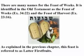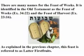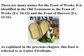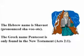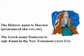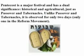There are many names for the Feast of Weeks. It is identified in the Old Testament as the Feast of Weeks, Exodus 34:22, and the Feast of Harvest, Exodus 23:16. As explained in the previous chapter, this feast is referred to as the latter first fruits. The Hebrew name is Shavuot, pronounced sha-voo-ote. The Greek name Pentecost is only found in the New Testament, Acts 2:1.